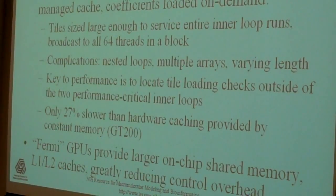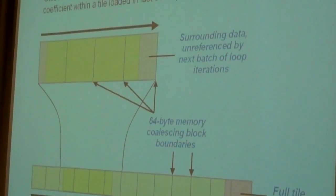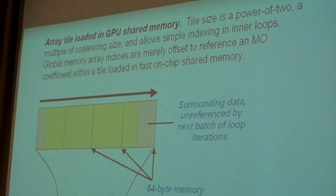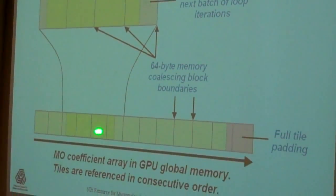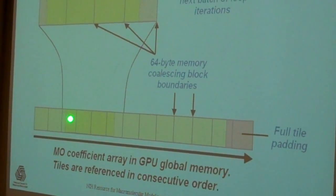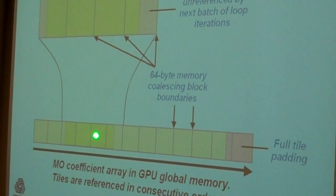we can get performance that's within 27% of the hardware caching that GT200 has. And then for Fermi, of course, we have L1 cache. So for the shared memory implementation, what we're basically doing, we have all of our data is in global memory. At any given part or step of the calculation, we are going to enter.